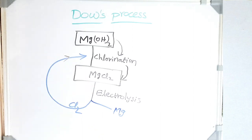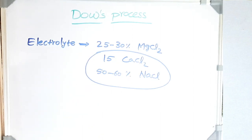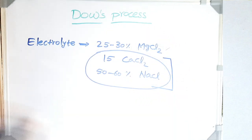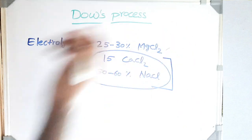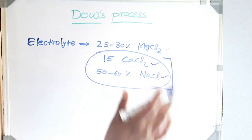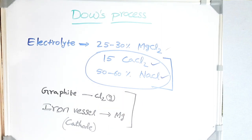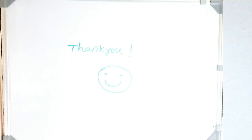We take the magnesium hydroxide and perform chlorination to get MgCl₂, followed by electrolysis. The products are magnesium and chlorine gas; the chlorine gas is recycled back into the chlorination process. During electrolysis, the electrolyte bath consists of 20–30% MgCl₂, around 15% CaCl₂, and 50–60% NaCl. CaCl₂ and NaCl must be more stable than MgCl₂ to avoid preferential decomposition. At the anode, chlorine evolves; at the cathode (iron vessel), magnesium deposits. Arrangements ensure no contact between magnesium and chlorine to avoid any backward reaction.